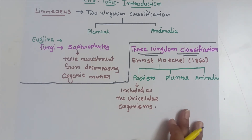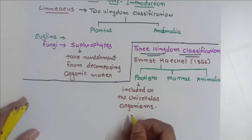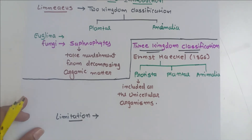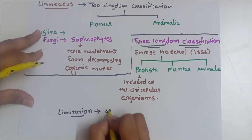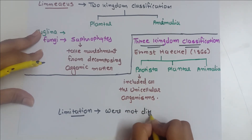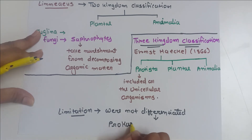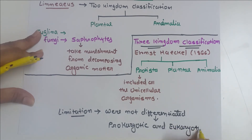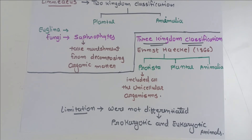Again, there was no specific place for fungi-like organisms. This classification also had limitations because it did not differentiate between prokaryotes and eukaryotes. Prokaryotic and eukaryotic organisms were not separated or differentiated. This is the main limitation of the three-kingdom classification.